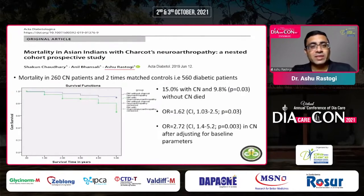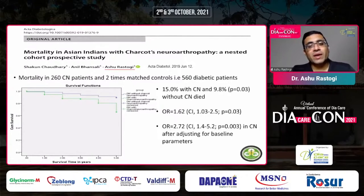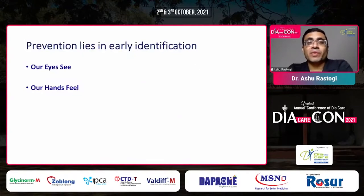Another important aspect is Charcot foot, which we should not forget. This is again one of the largest studies in the world, examining 260 Charcot patients matched with twice the number of controls. We found that patients with Charcot have an increased risk of mortality with an odds ratio of around 2.7 — meaning almost three times the risk of dying compared to patients who do not develop Charcot foot.